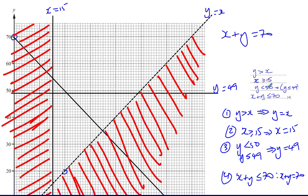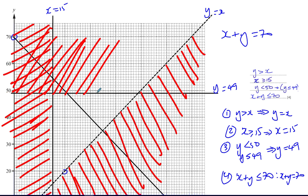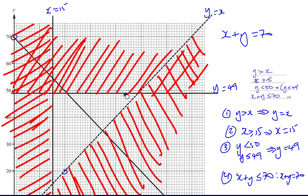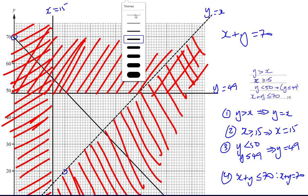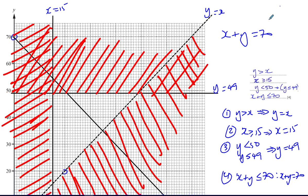Then Y ≤ 49 — we want what's below this line, so we shade what's above it. Always do your shading in pencil — always. Because if you make a mistake, you've got one diagram on the paper and it's going to be a hassle. Any diagram, anything you draw, try to do it in pencil so that if you make a mistake it's easier to correct.